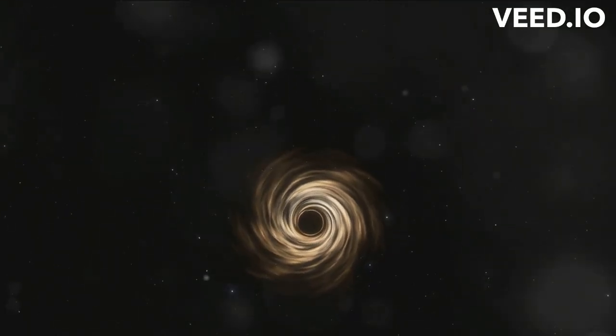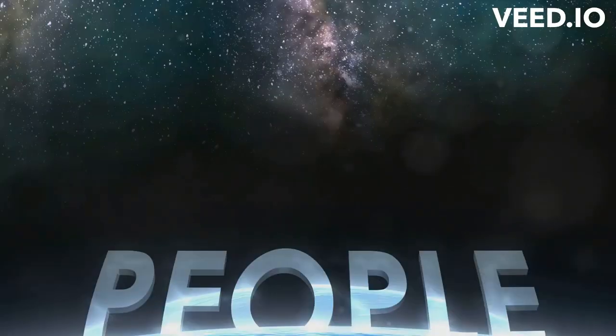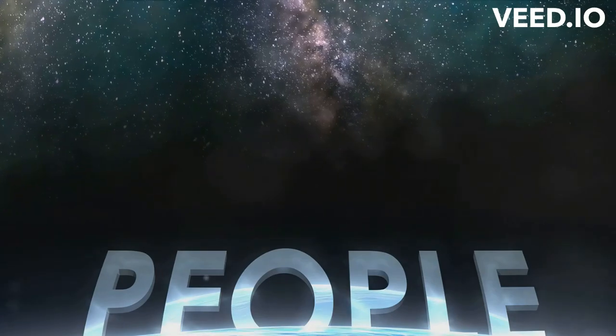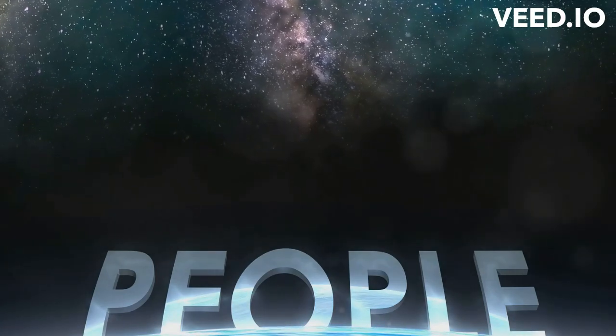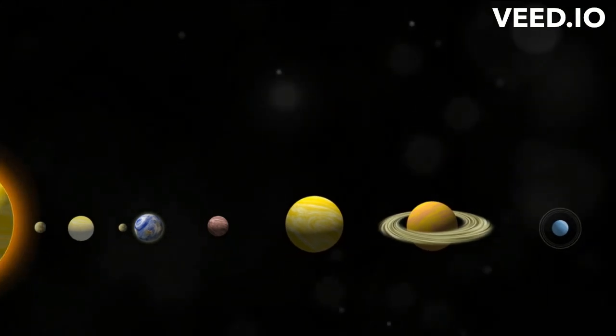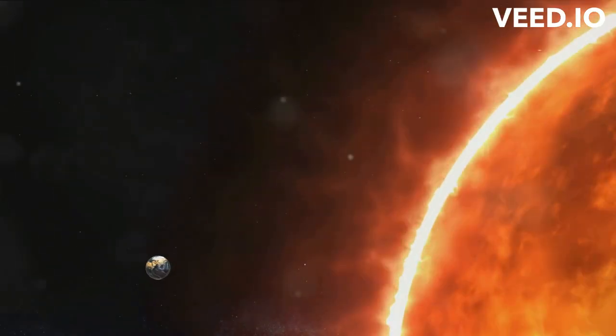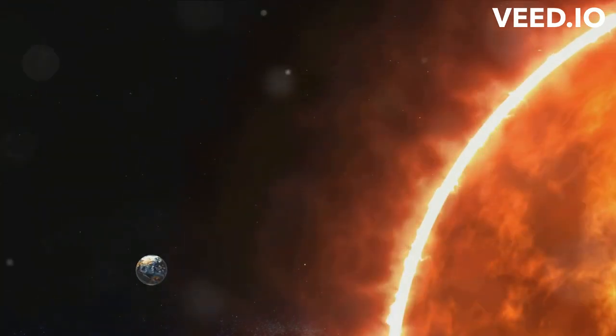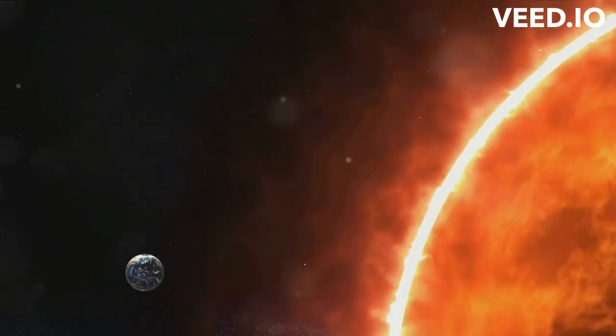The more mass an object has, the stronger its gravitational pull. That's why we're stuck to the Earth, a rather massive object, instead of floating off into space. Now, let's zoom out a bit. Picture our solar system. The Sun, a behemoth of mass, exerts a powerful gravitational pull on all the planets, including our Earth.